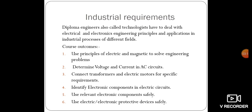The third course outcome is transformers and electric motors. A transformer is a static device and an electric motor is a rotating device. We have to understand both equipments so that we are clear about how electric and magnetic fields operate in them. We also have to understand electric components in circuits and how to use them safely.